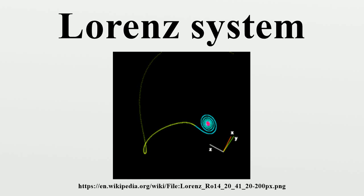When the parameters are set appropriately, the Lorenz system has chaotic solutions, and almost all initial points will tend to an invariant set — the Lorenz attractor — a strange attractor and fractal. Its Hausdorff dimension is estimated to be 2.06 ± 0.01, and the correlation dimension is estimated to be 2.05 ± 0.01.